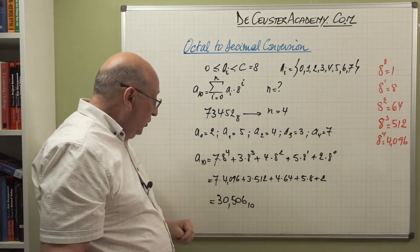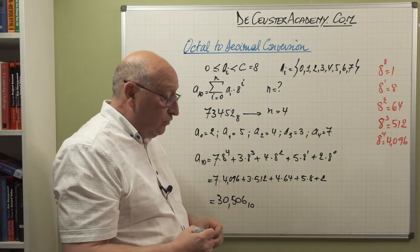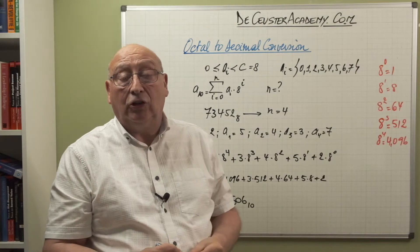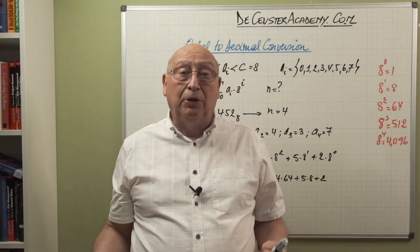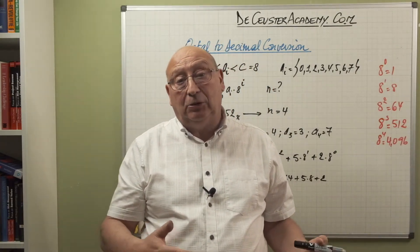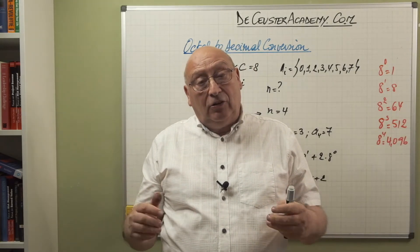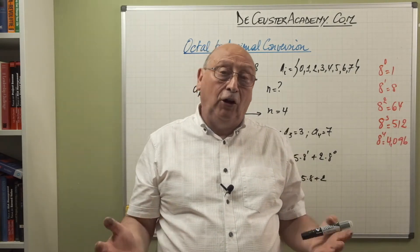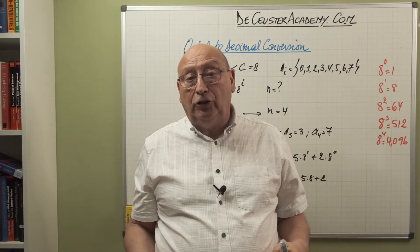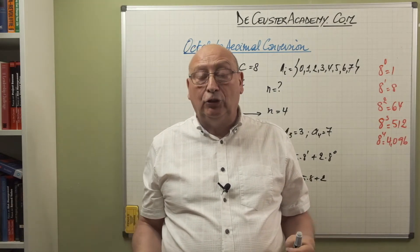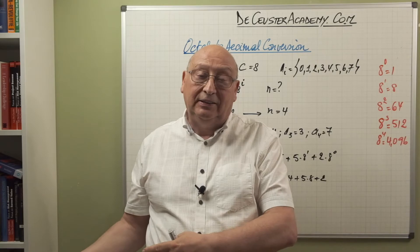So we can say that the octal number 73452 is the same as the decimal number 30506. That's all about the conversions between octal and decimal numbers. In the following videos we will look at other conversions — we still have to do the decimal to hexadecimal and hexadecimal to decimal conversions.